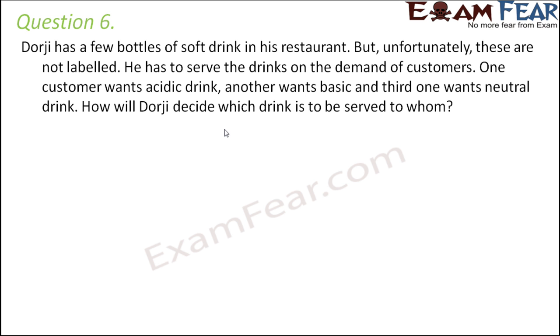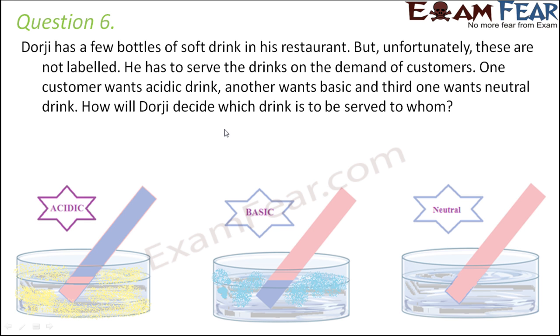Now again he can perform the indicator test, for example the litmus test. So wherever blue litmus turns red that is acidic, for whichever drink red litmus turns blue that is basic, and where there is no change that is neutral. So basically a little amount of drink has to be taken in a glass and then the litmus paper had to be put into it.